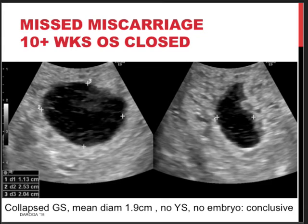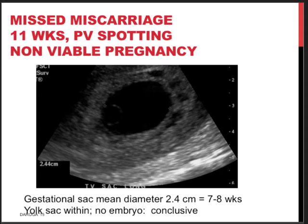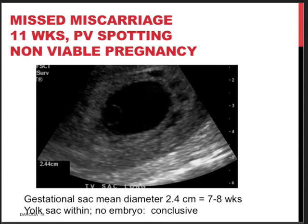Here we see a somewhat collapsed gestational sac with a mean diameter of 1.9 centimeters. The gestational age is certain at 10 weeks plus, but there is no yolk sac and no embryo — hence this ultrasound scan is conclusive. There is no need to repeat the beta-HCG or the ultrasound scan in one week; there is no hope and repeating is not the most appropriate care. In another example, a missed miscarriage in a lady with a certain gestational age of 11 weeks and some PV spotting shows a mean sac of 2.4 centimeters, consistent with only 7 to 8 weeks, with a yolk sac visible but no embryo — again conclusive.